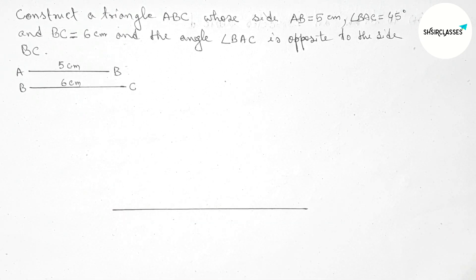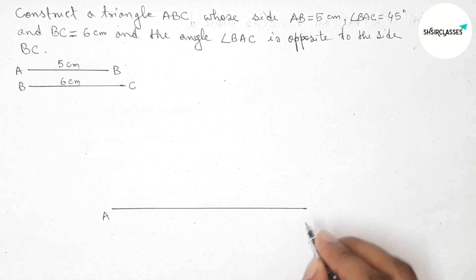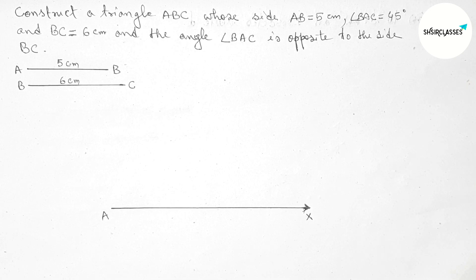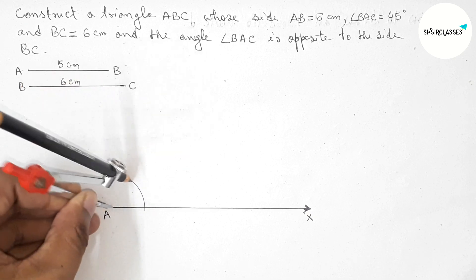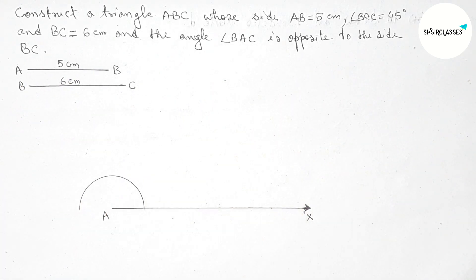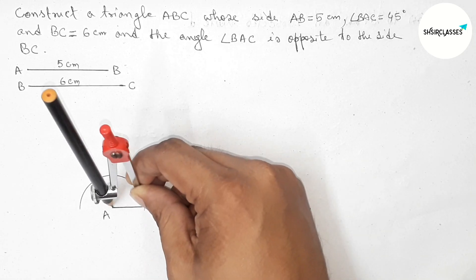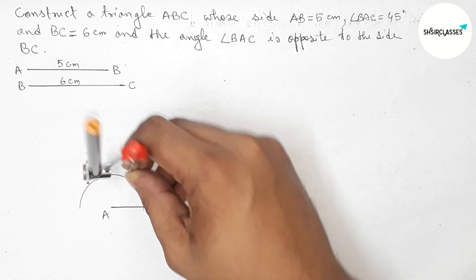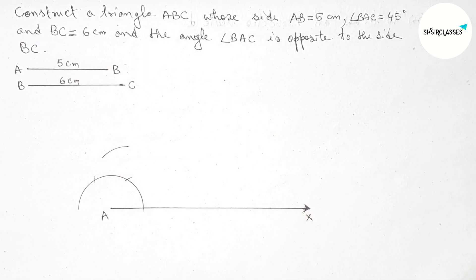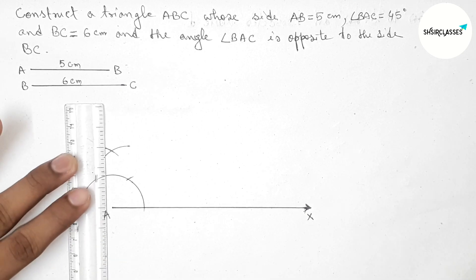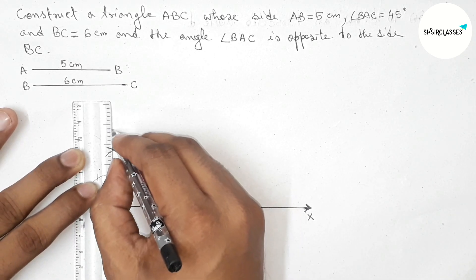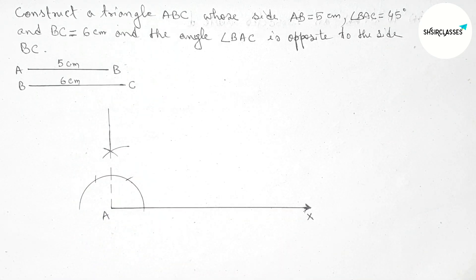Next, we draw a line segment of any length, taking point A with an arrow mark. Now we draw a 90 degree angle at point A with the help of a compass. First putting the compass on point A, taking any length, drawing an arc, then putting the compass at the intersection points with the same length and cutting arcs to construct the 90 degree angle.